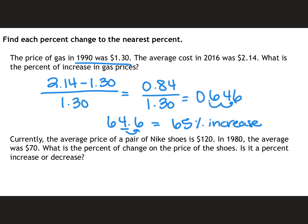Currently the average price of a pair of Nikes is $120. In 1980 the average was $70. What is the percent of change of the price of shoes? And is it a percent increase or decrease? So first I'm going to figure out how much it has changed. And to do that again I'm going to take the larger amount and subtract off the smaller amount. And I'm going to take that then and divide it by the original. The original again is the oldest price, which would be in 1980. So I'm going to divide that by $70. So $120 minus $70, I end up with $50.